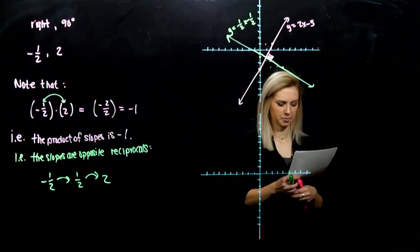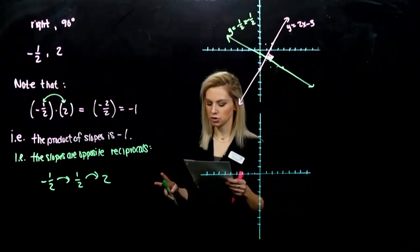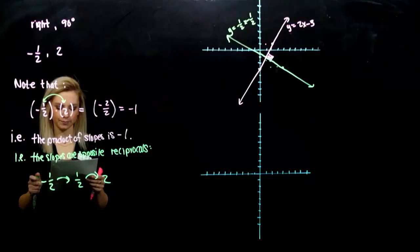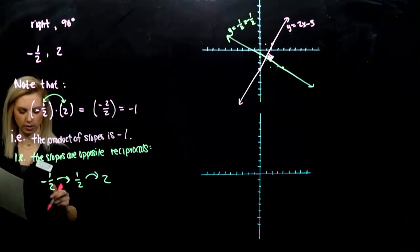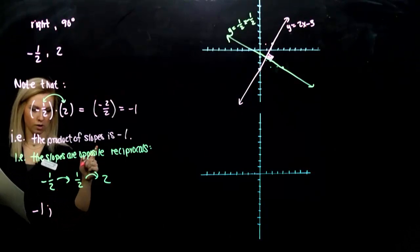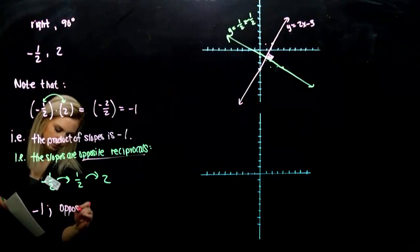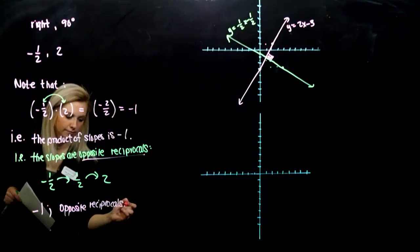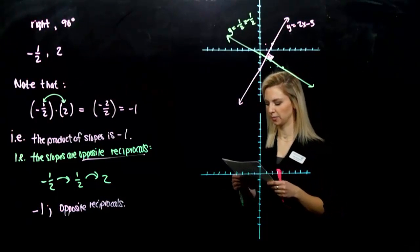So on the next page, just to sum up what we're talking about. Perpendicular lines. Two non-vertical lines are perpendicular if the product of their slopes is negative one, i.e., the slopes are what? Opposite reciprocals. So either one is good proof to tell me, hey, these things are perpendicular.